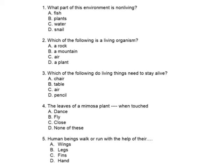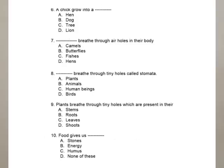Fifth question: human beings walk or run with the help of their legs. So 'legs' is the right answer. Coming to the sixth question: a chick grows into a hen. When the chick grows, it becomes a hen — 'hen' is the right answer.